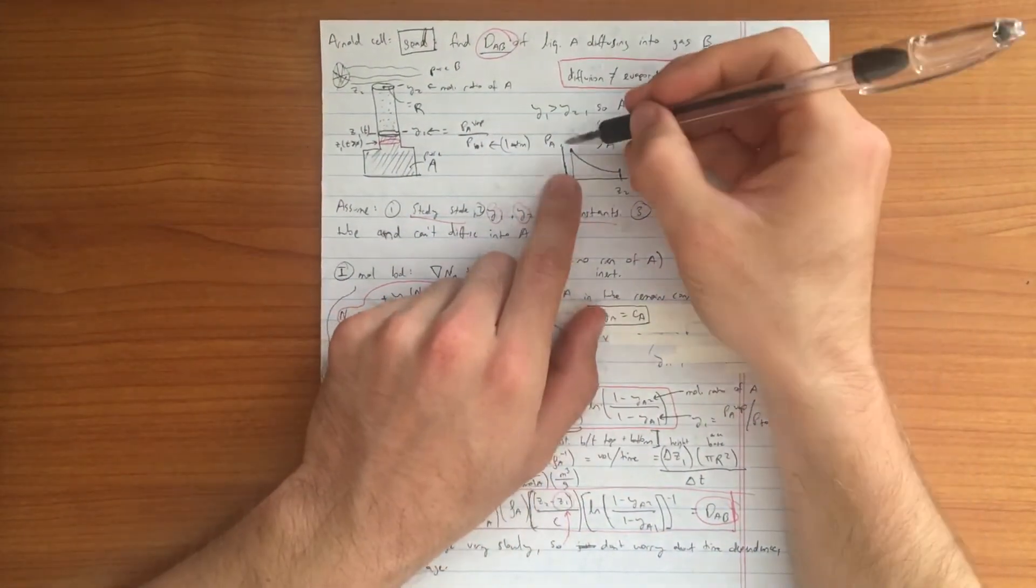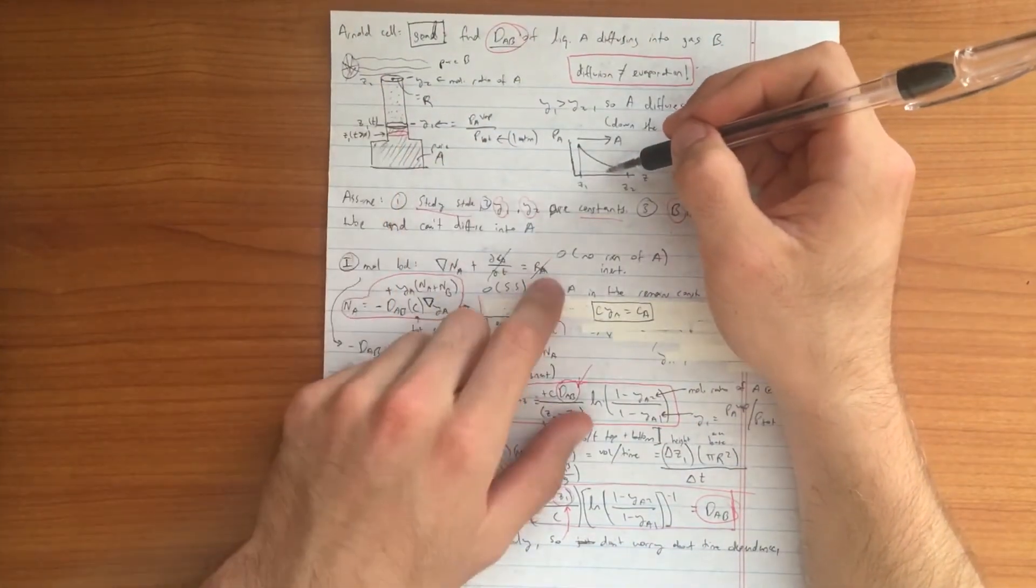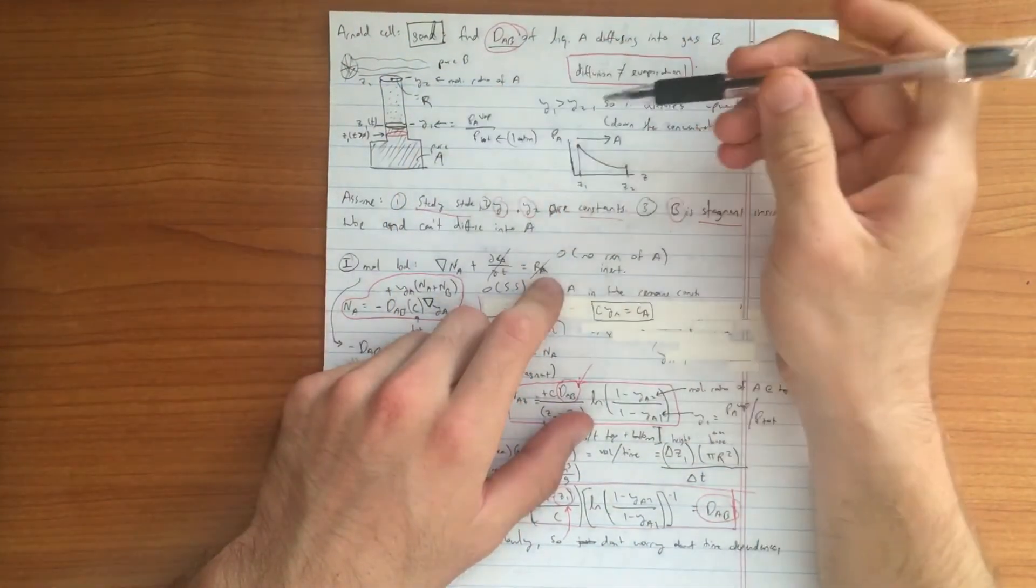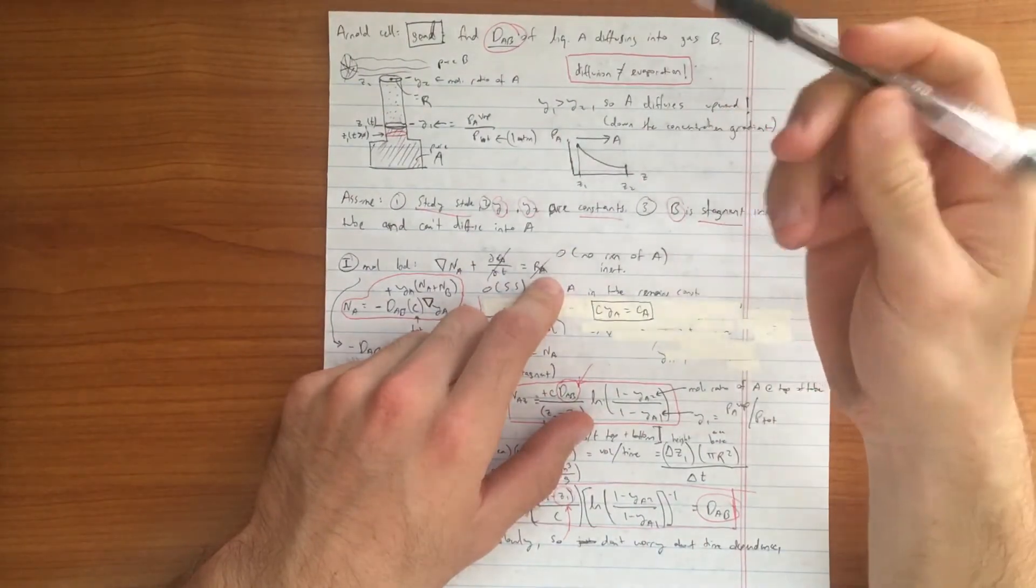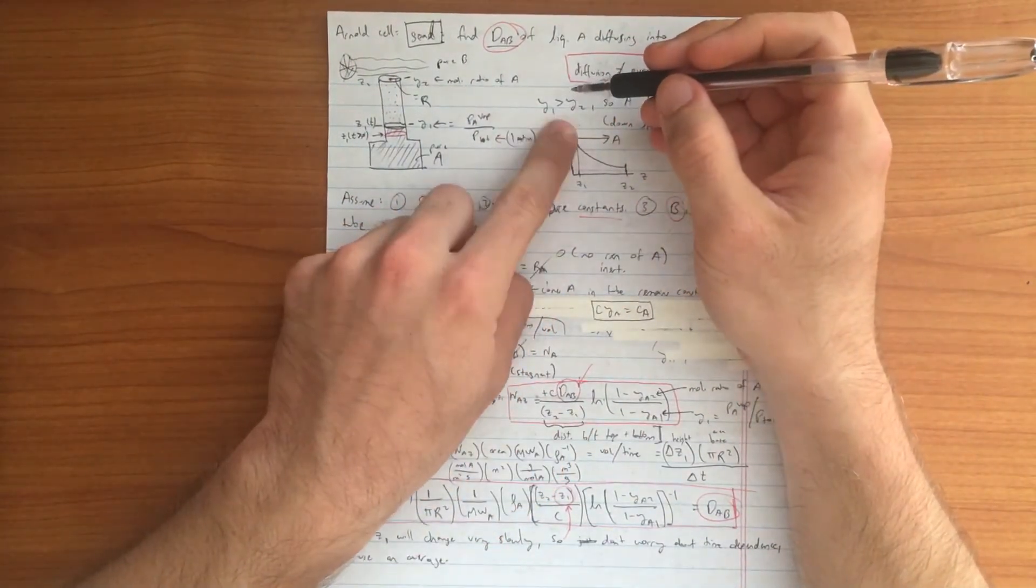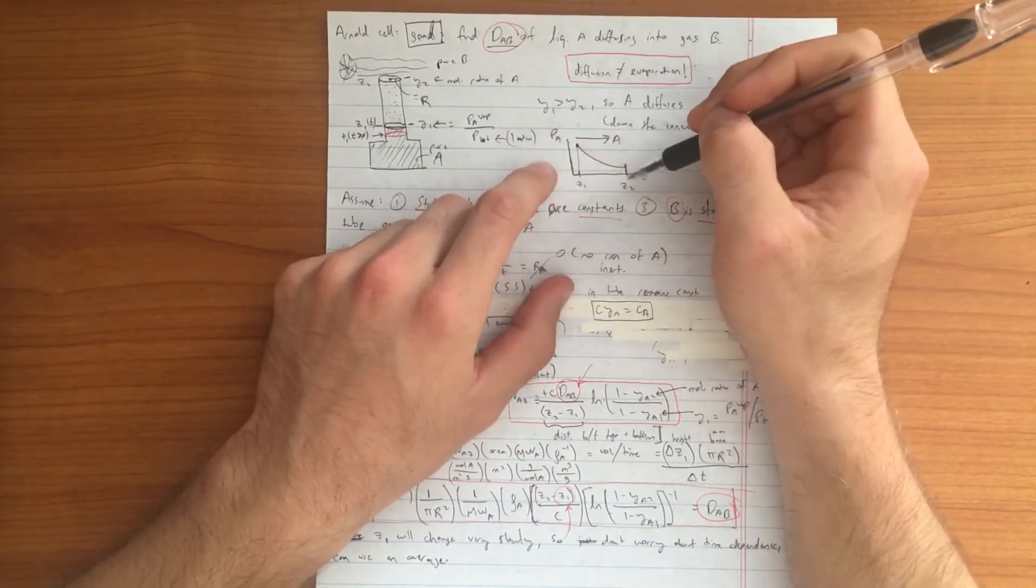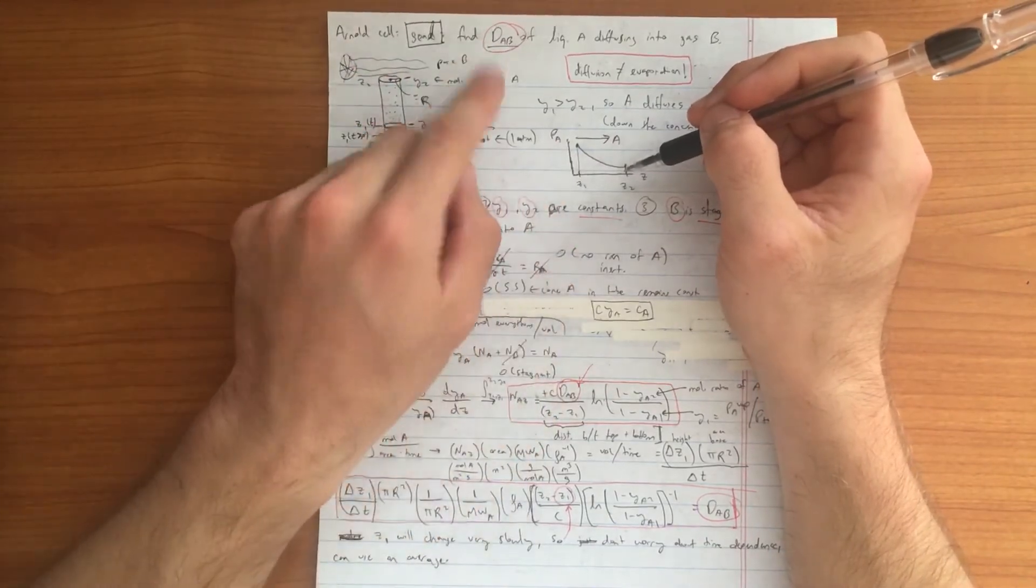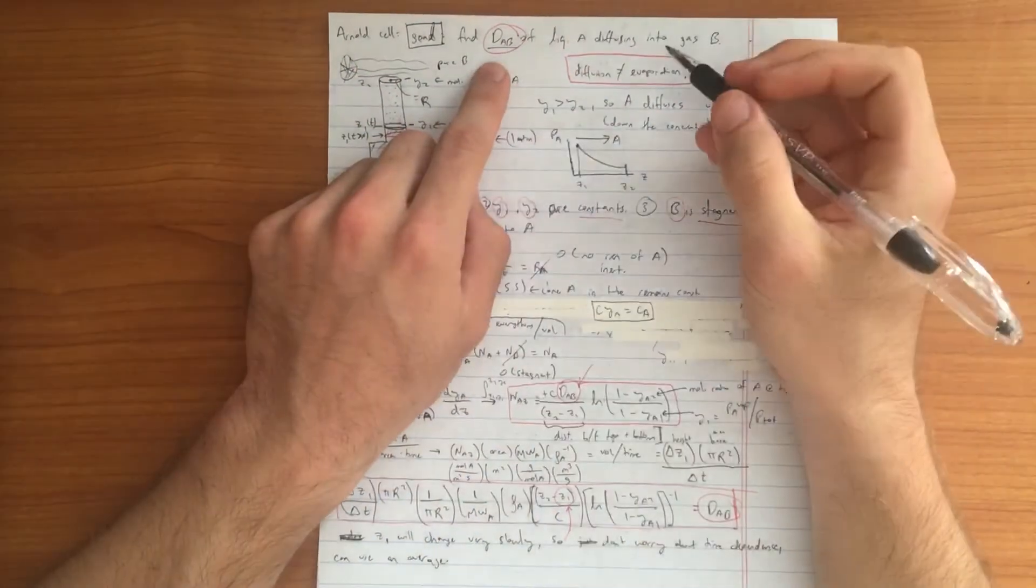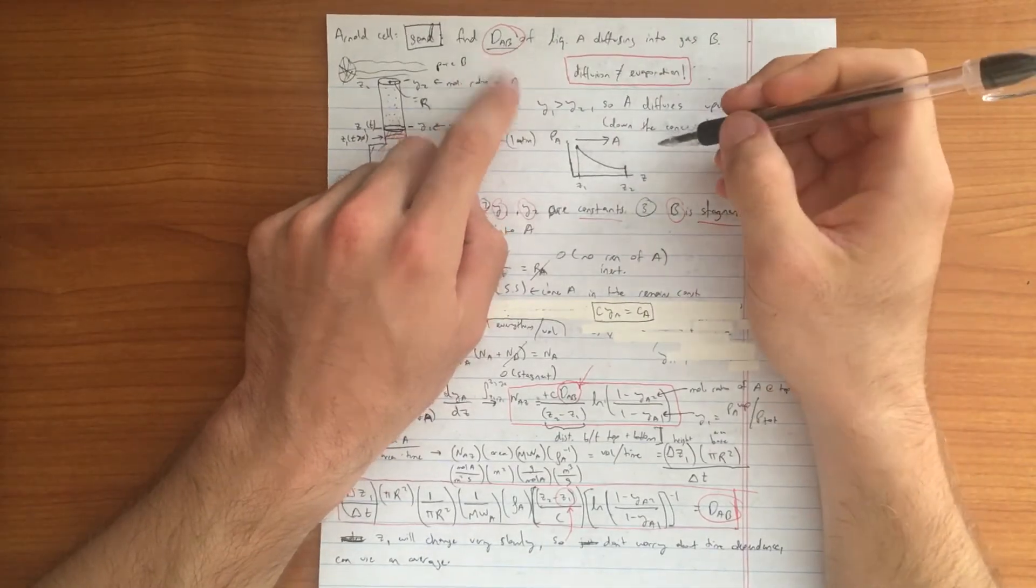Consequently A will move down the concentration gradient which means it's moving up the Arnold cell into the gas B. It's important to note that the concentration Y1 will always be greater than Y2. If this wasn't the case we would have no diffusion and we wouldn't be able to measure anything. The ultimate goal of this is to determine the diffusivity value of A into B.